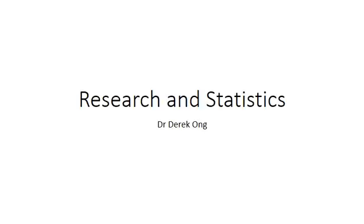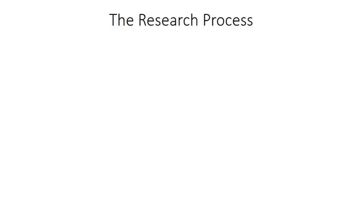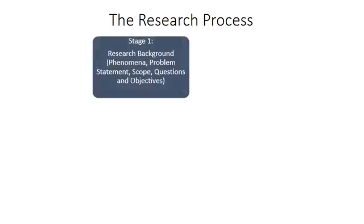There are a few things that you need to understand before you could do any sort of statistical analysis. First, before we begin, we need to understand the research process. The research process starts by us having a research background. This could be a question, a problem statement, helping us to find what is the scope, and the questions and the objectives that we want to achieve.